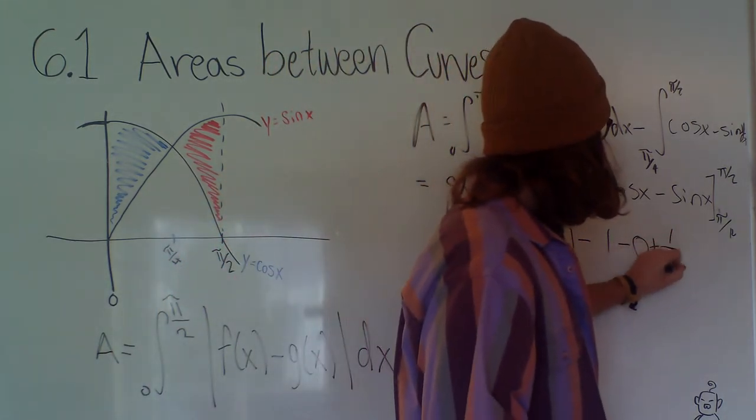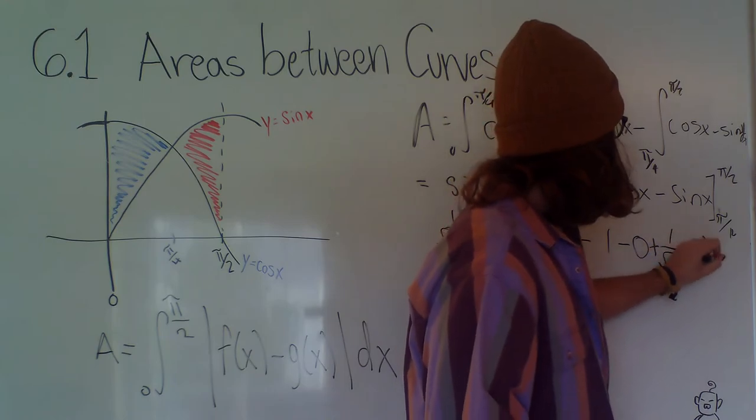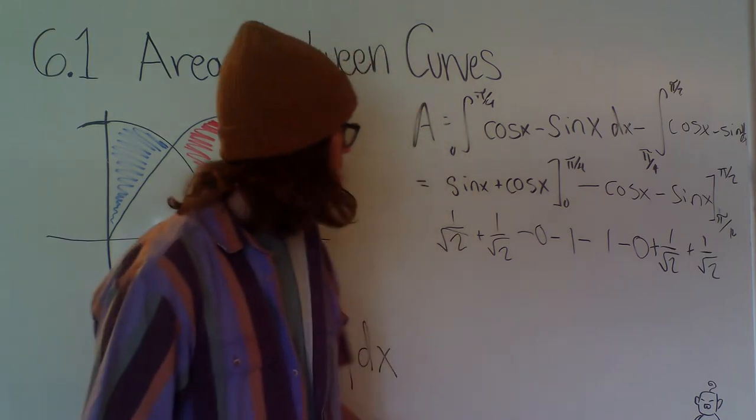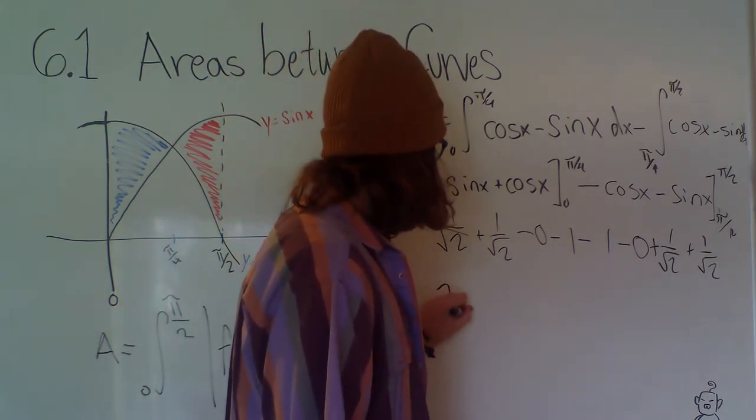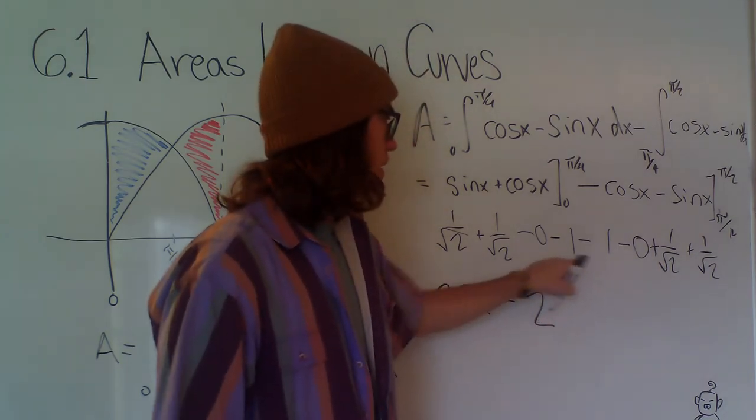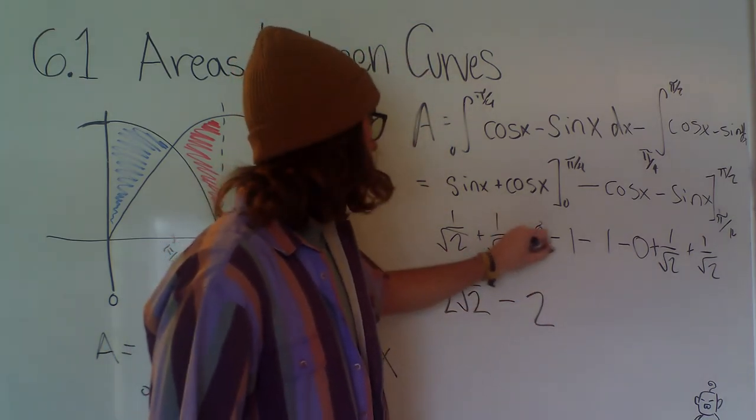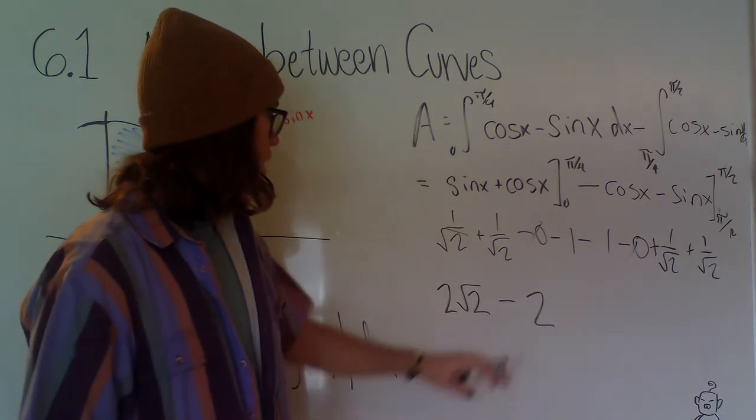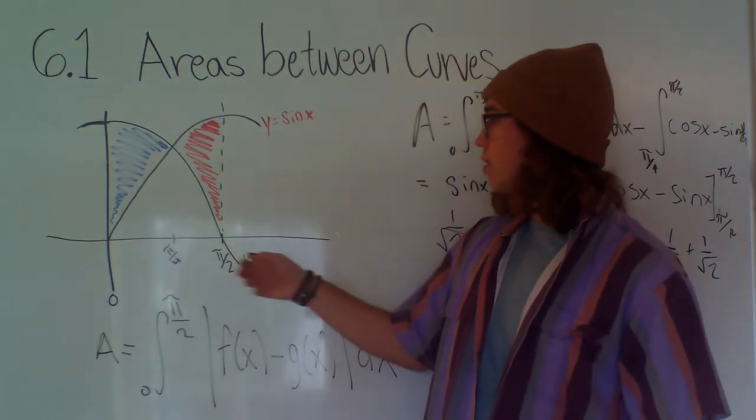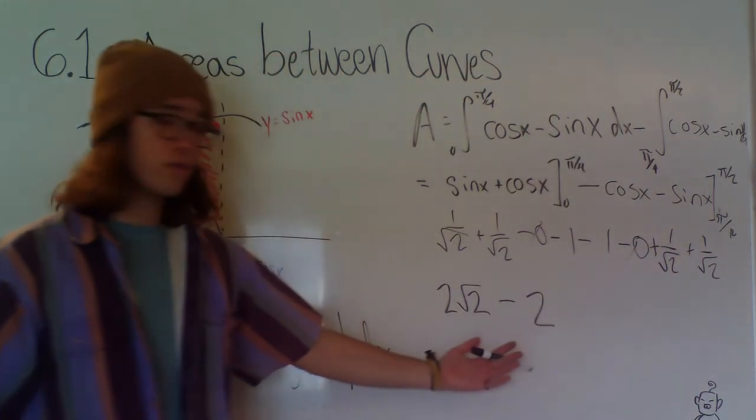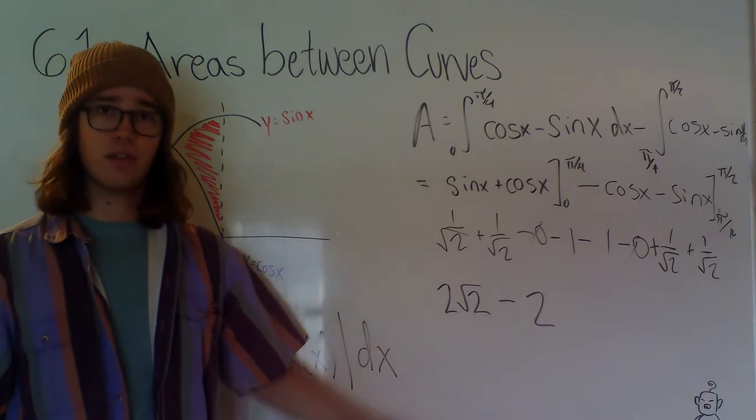Plus another 1 over root 2 plus 1 over root 2. And we find, well, there's 1, 2, 3, 4 root 2's. That just turns into 2 root 2 minus 2 because there are two negative 1's. And we find that the area between cosine of x and sine of x on the region 0 to pi over 2 is just equal to 2 root 2 minus 2.